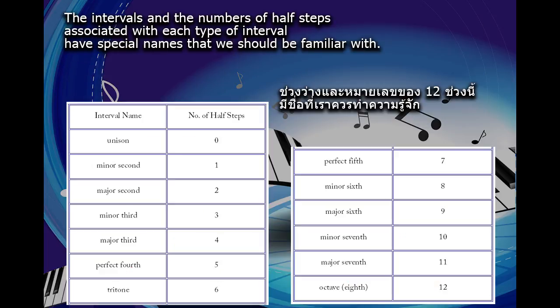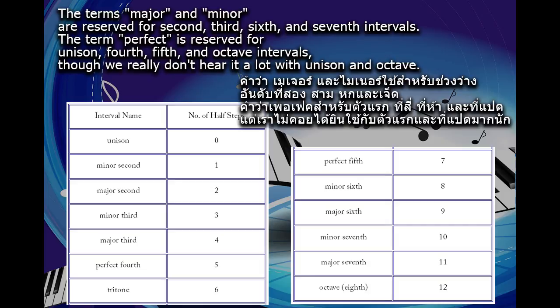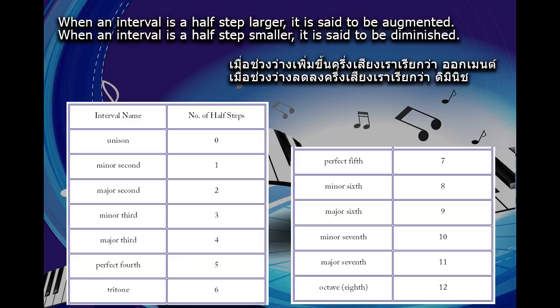The intervals and the number of half steps associated with each type of interval have special names we should be familiar with. The terms major and minor are reserved for second, third, sixth, and seventh intervals. The term perfect is reserved for unison, fourth, fifth, and octave intervals, though we really don't hear it a lot with unison and octave. When an interval is a half-step larger, it is said to be augmented. When an interval is a half-step smaller, it is said to be diminished.